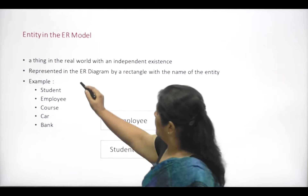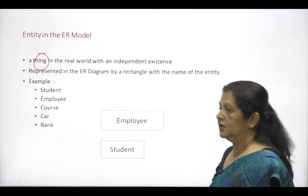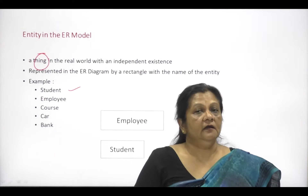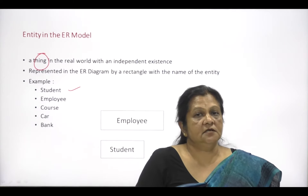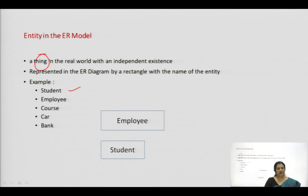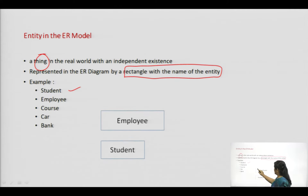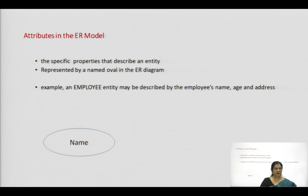What is an entity? An entity is a thing in the real or mini world with some independent existence. For example, in a mini world consisting of a college, a student is an entity, a faculty is an entity, and a classroom is an entity. Anything that exists in the mini world or the real world is called an entity. The entity is represented in the ER diagram by a rectangle with the name written inside it. For example, the entity 'employee' is shown as a rectangle with 'employee' written in it. Similarly for 'student'.